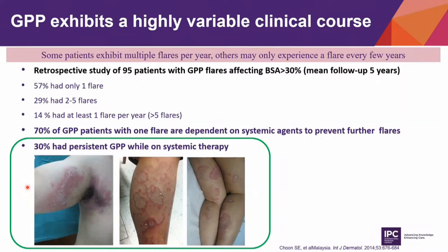Although only 57% of patients had only one flare during the study period, 70% of these patients were actually dependent on systemic agents to prevent further flares. This occurred promptly on attempts to taper systemic therapy or when exposed to classic triggers like stress or infection, even while still on systemic therapy. Furthermore, about 30% of our patients on systemic therapy had persistent pustules, which usually manifested as annular pustular psoriasis commonly located on the lower limbs.